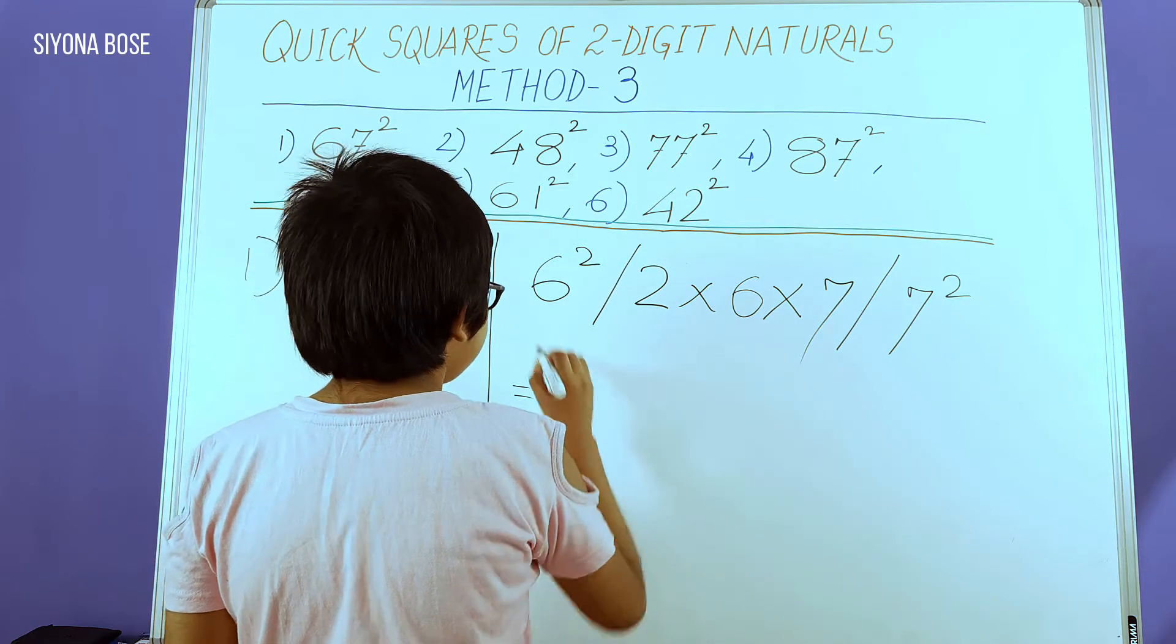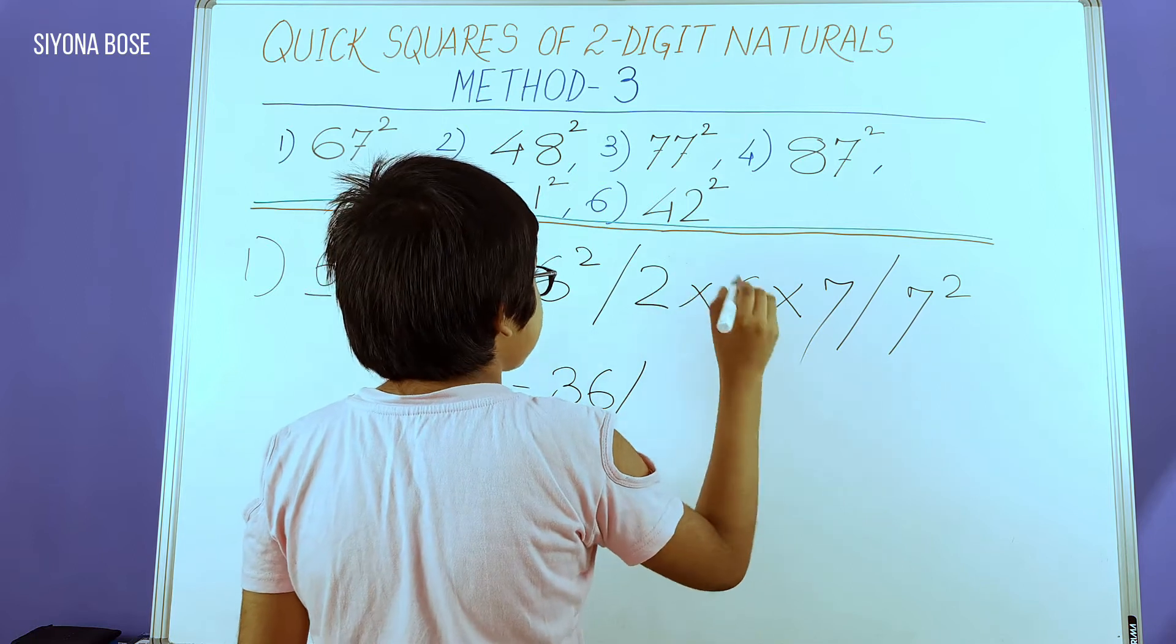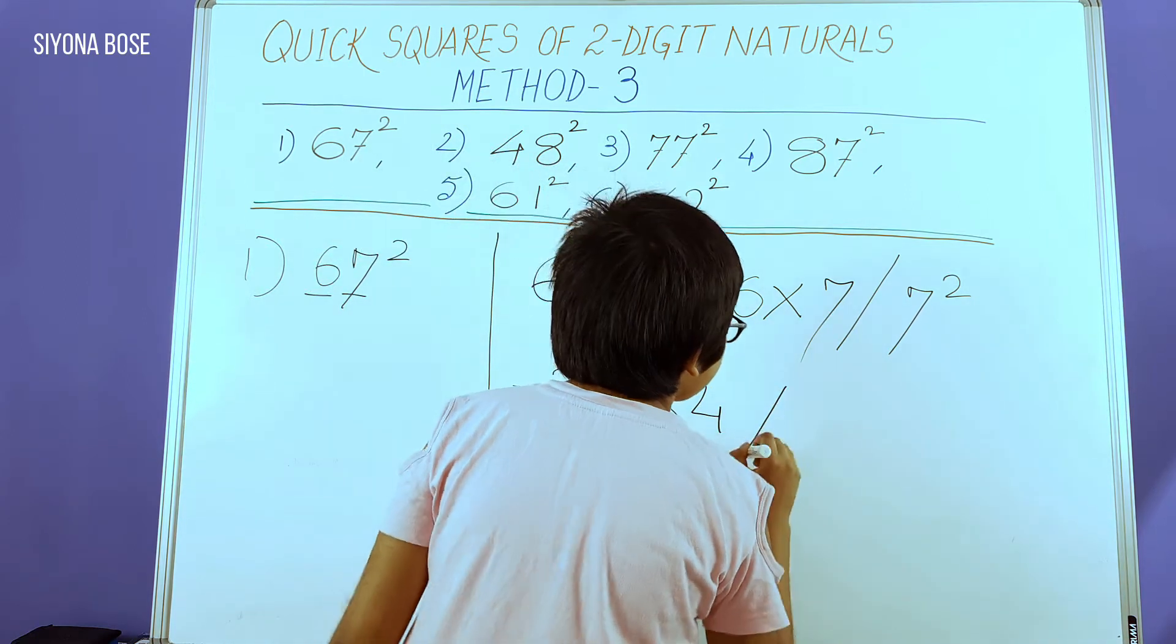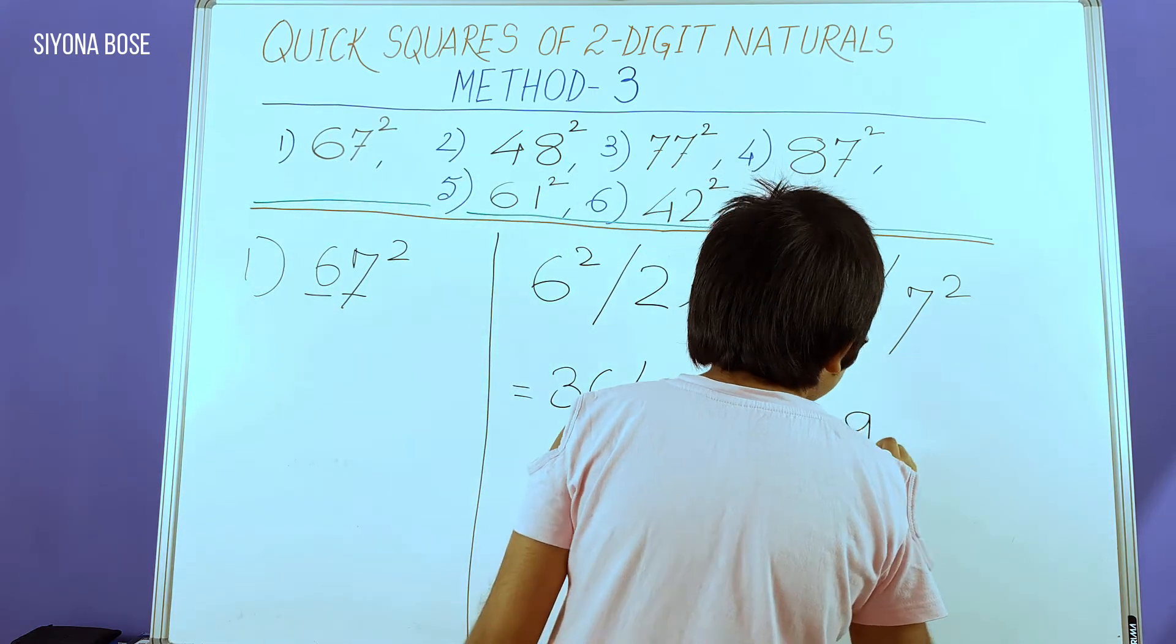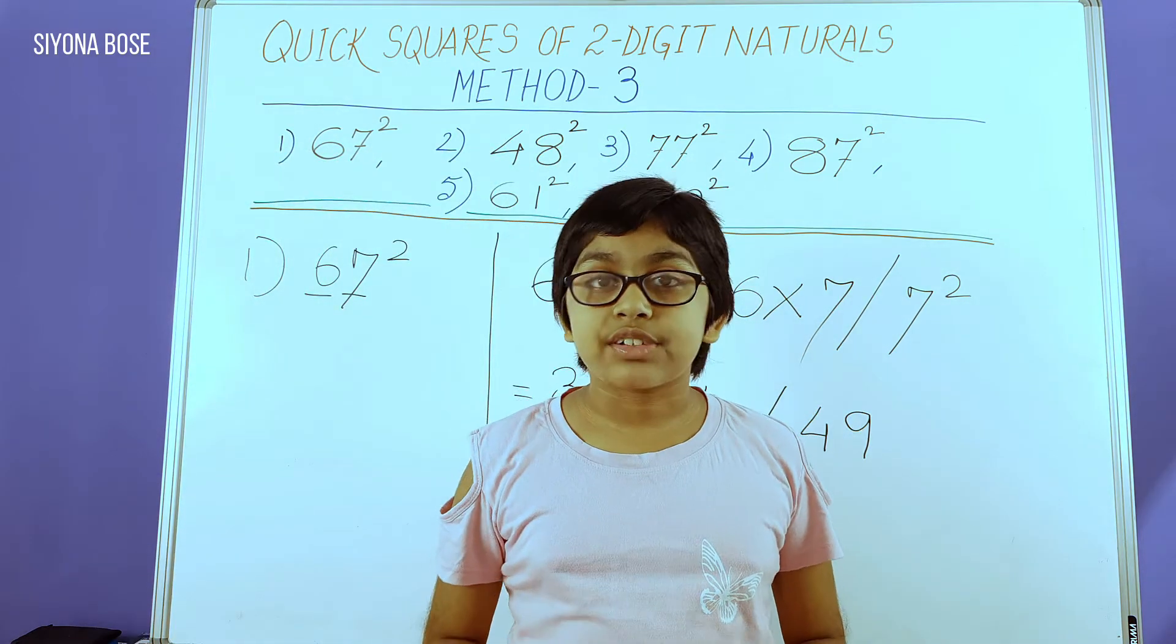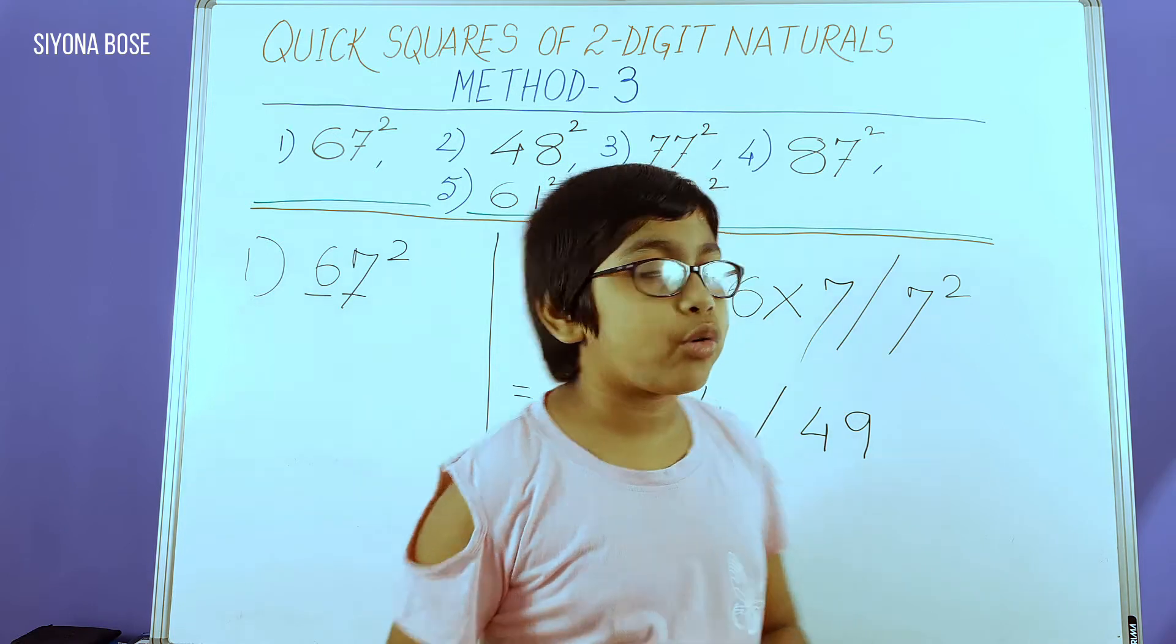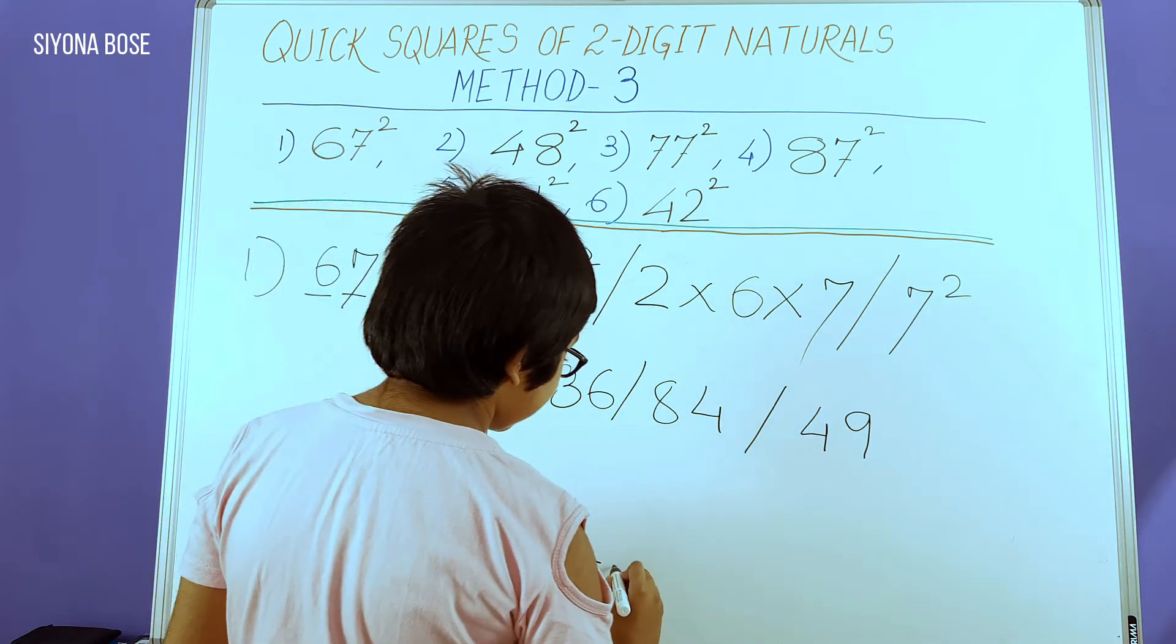Let us simplify this. 6 squared is 36. 2 times 6 times 7 is 84. 7 squared is 49. Now, as you can remember, the squares from 32 through 99 have 4 digits. So whatever we're doing today is going to have 4 digits. Obviously, I need to make 4 spaces.